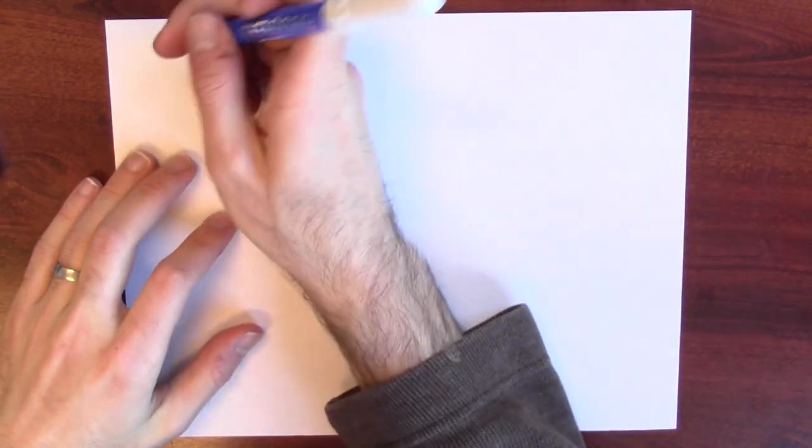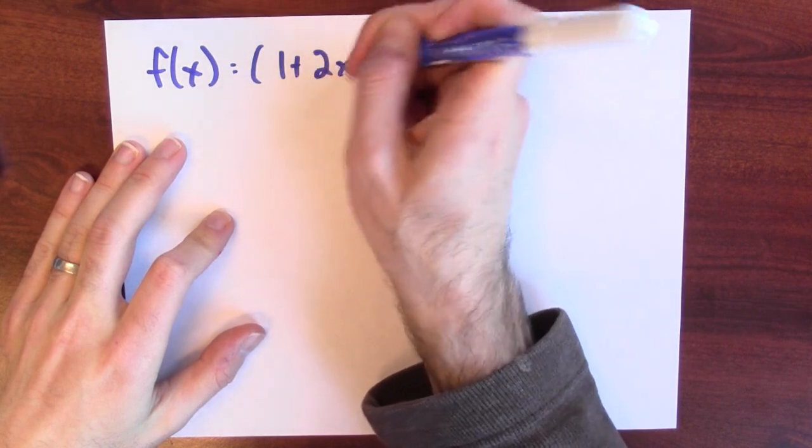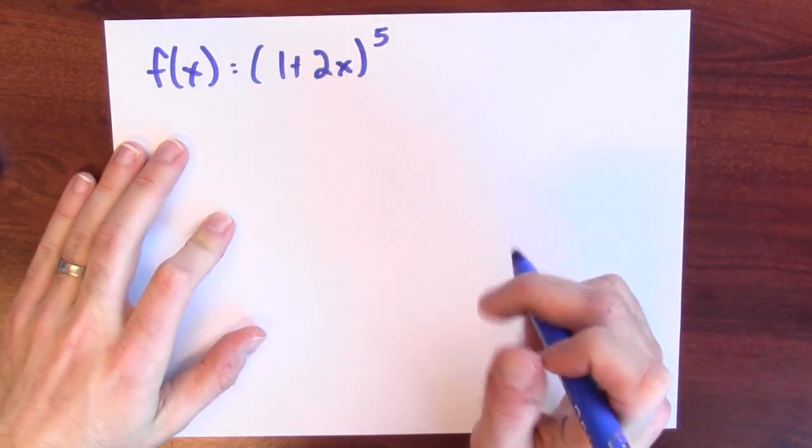I want to differentiate really complicated functions. This is a concrete example. Take a look at the function f of x equals 1 plus 2x to the fifth power.